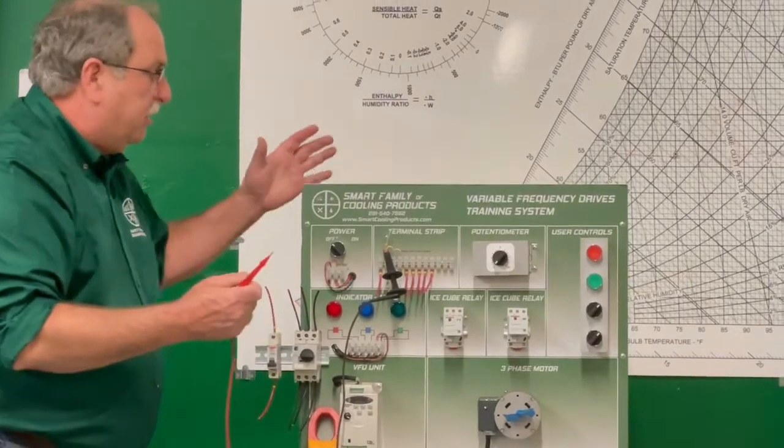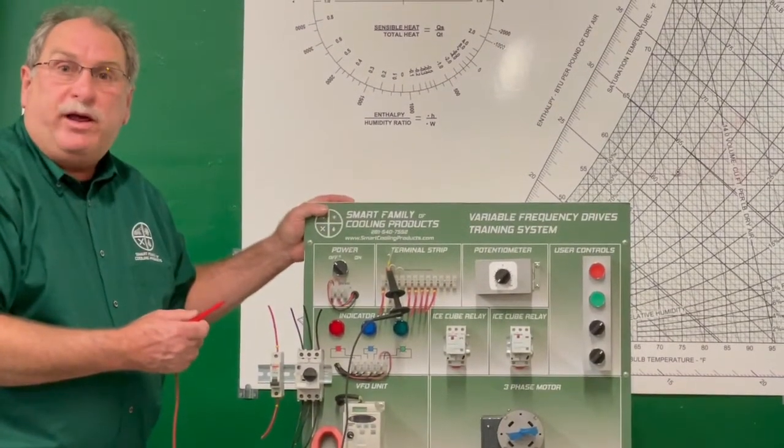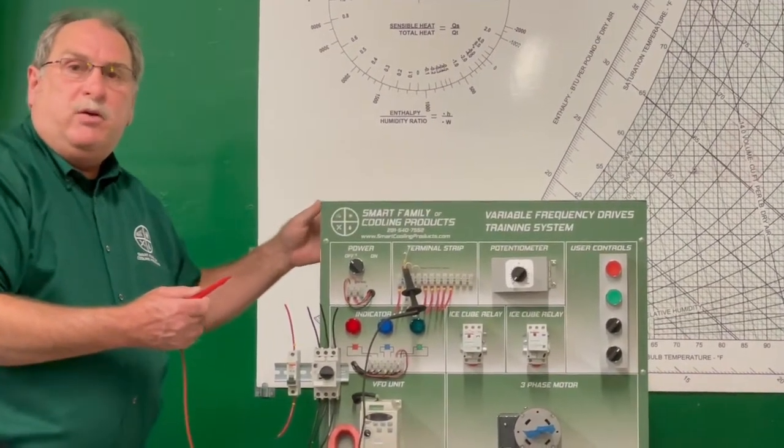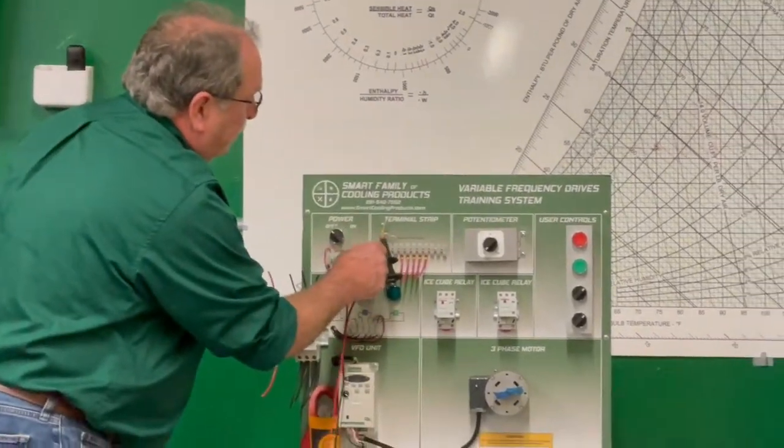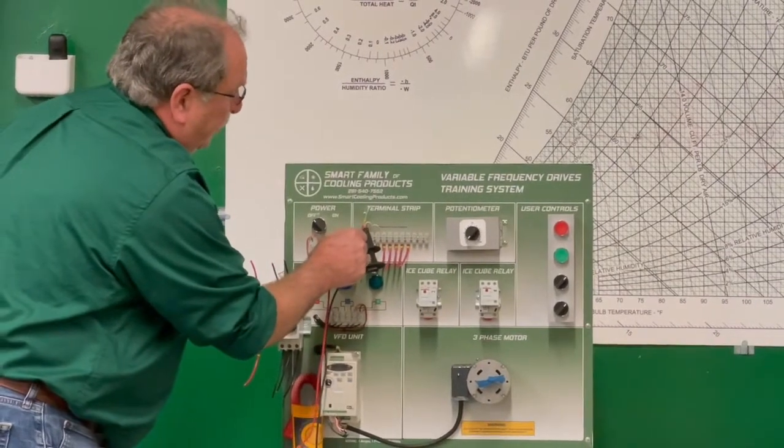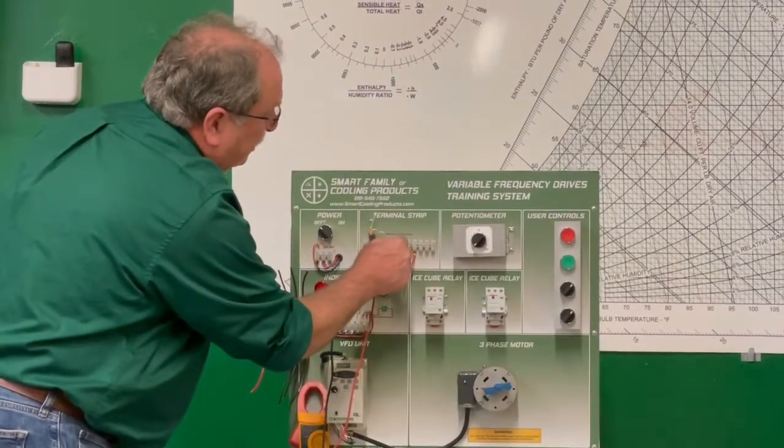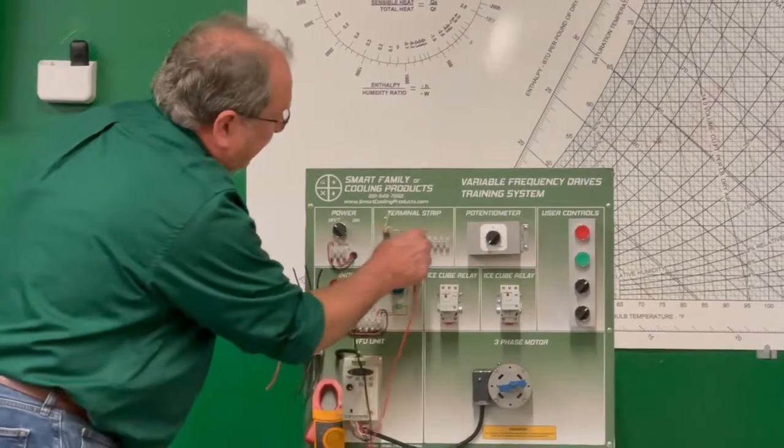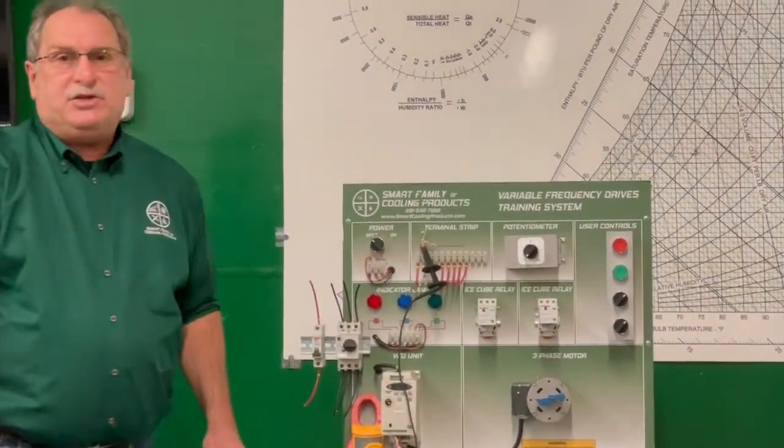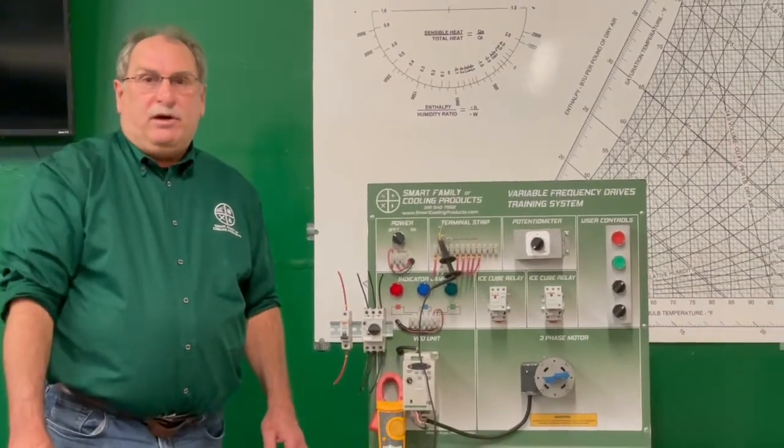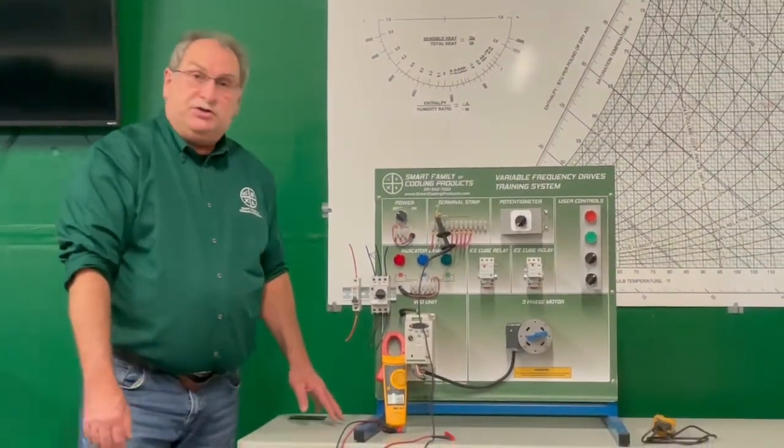And you don't want to have one hand on the grounded part of the metal. They always say maybe if you can put one hand in your pocket, that way you're safer. You can go through and you can kind of work across the terminal strip watching your meter. And that way there's less of a chance of getting shocked if you accidentally get into something that you shouldn't be.